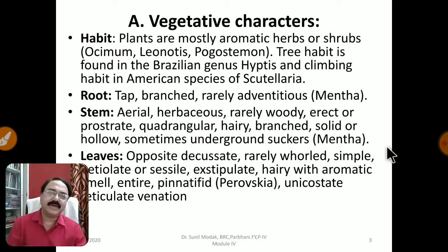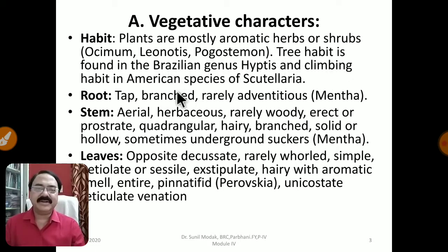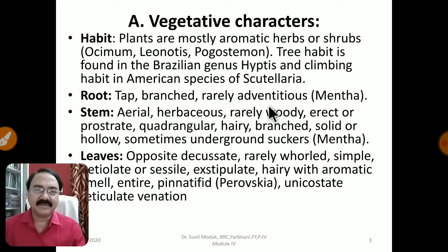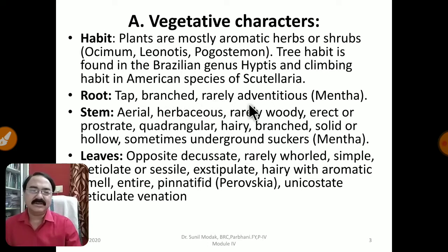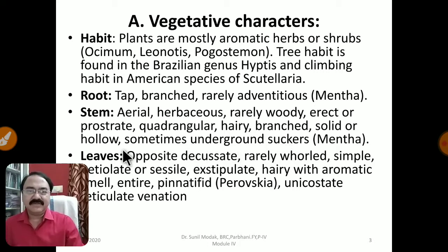Regarding the vegetative characters of this family, the plants are mostly aromatic herbs or sometimes shrubs — for example Leonotis — or trees, as tree habit is found in Tectona. Climbing habit is seen in some American species of Scutellaria. The root system is a tap root system, highly branched, rarely adventitious — for example in Mentha (pudina), where adventitious roots are also seen when Mentha spreads along the ground and roots are produced from the stem.